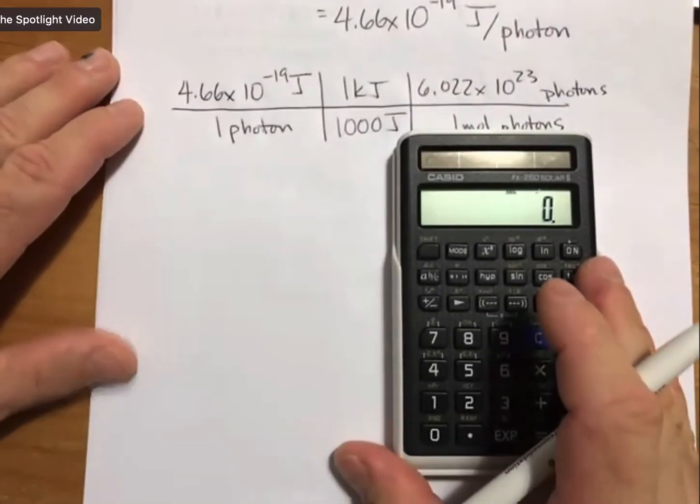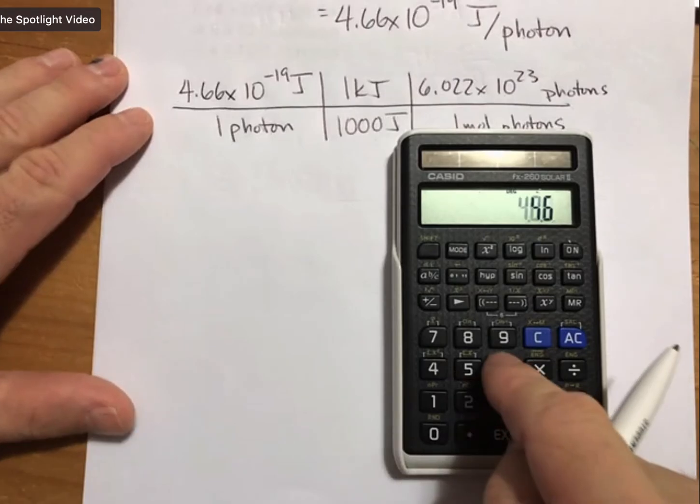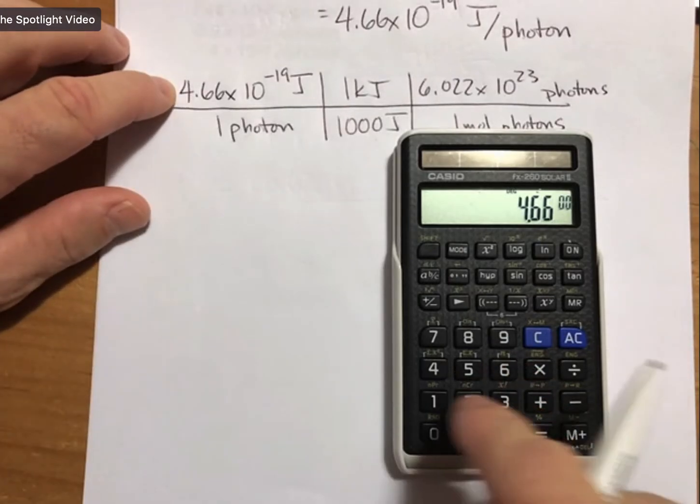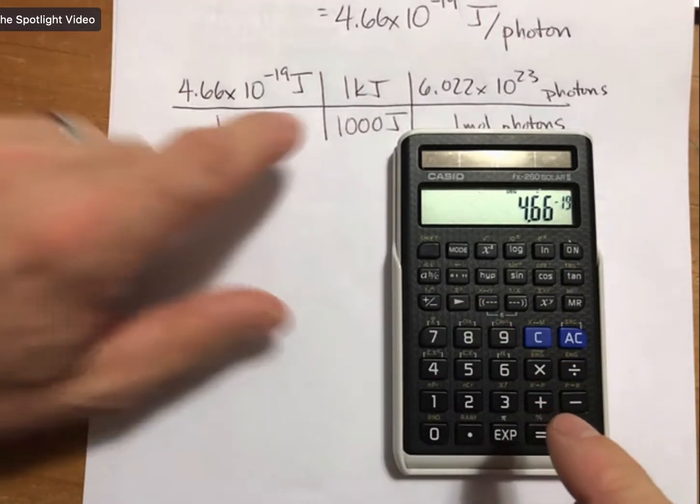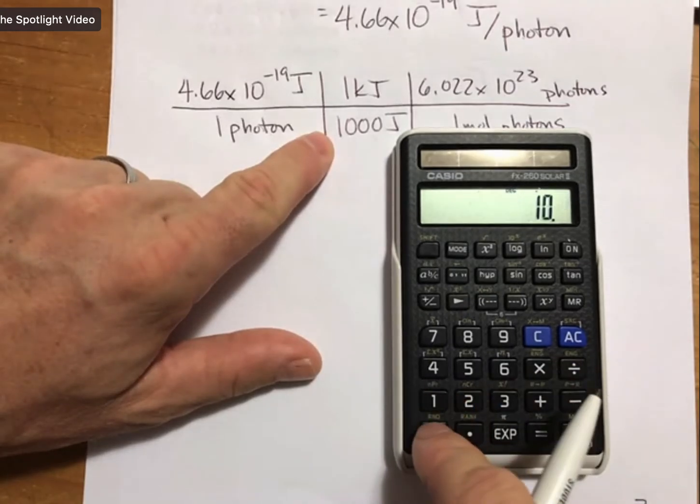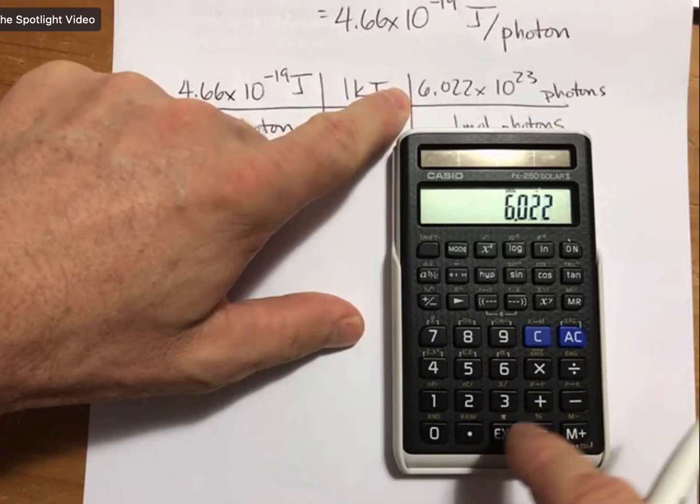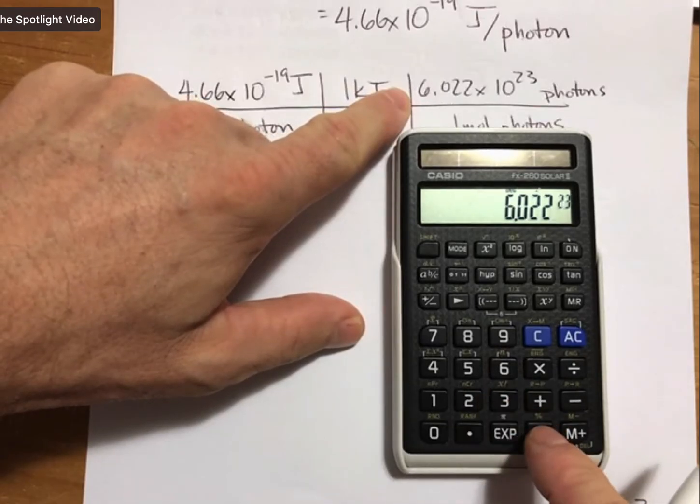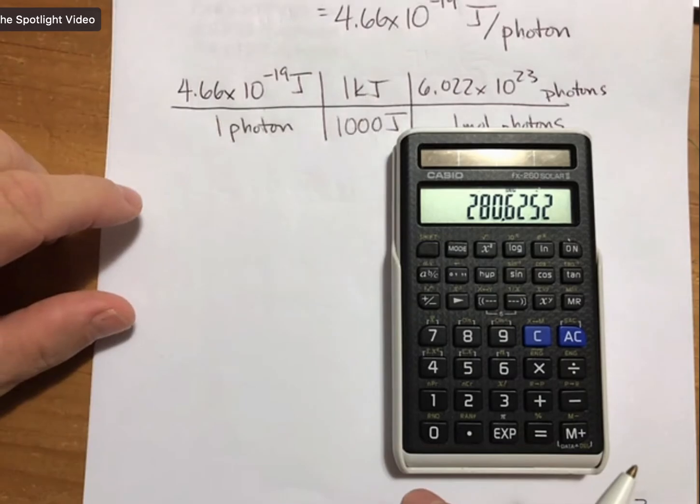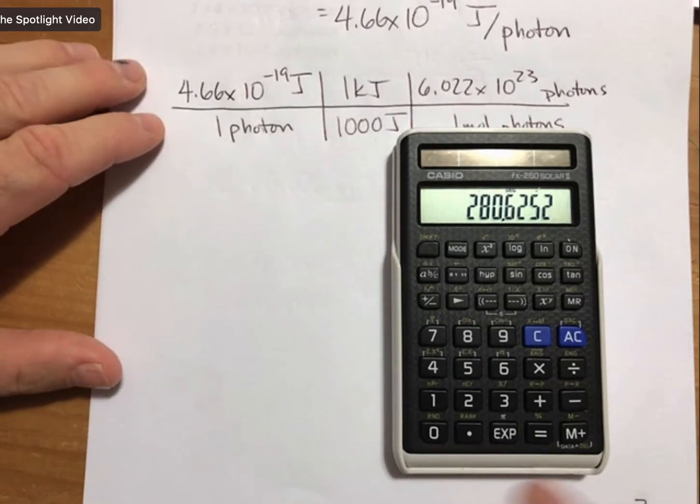As far as the calculations go for this, I went back to this. I'm going to start with 4.66 times 10 to the minus 19. I'm going to divide it by 1,000. I'm going to multiply it times 6.022 times 10 to the 23rd. And I get, to three sig figs, 281.